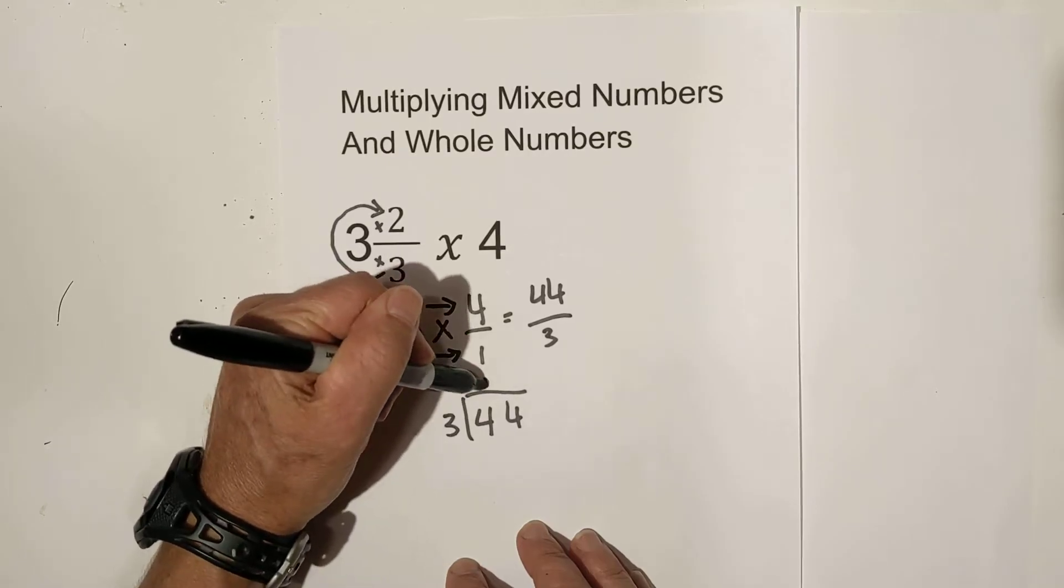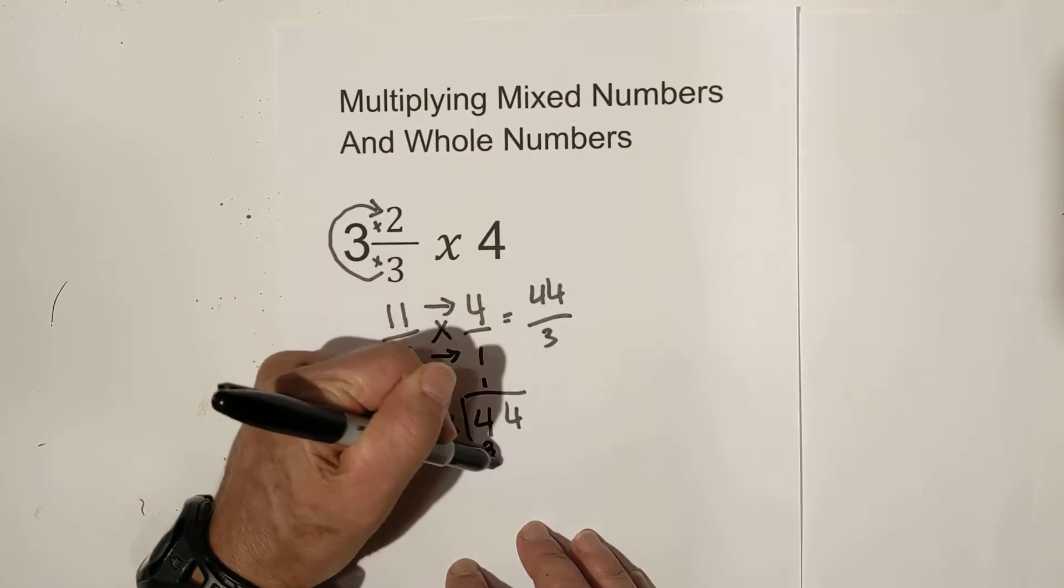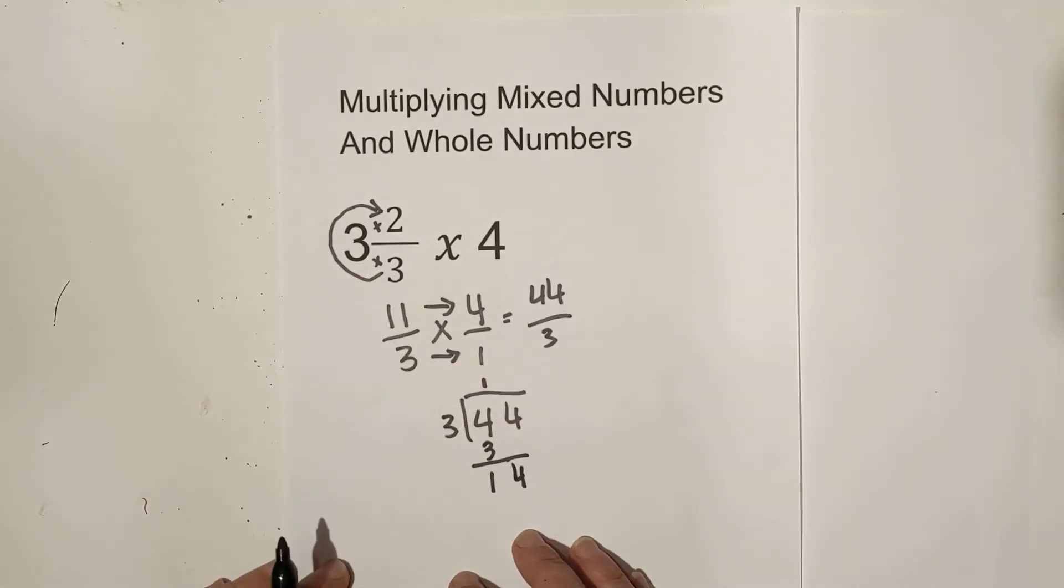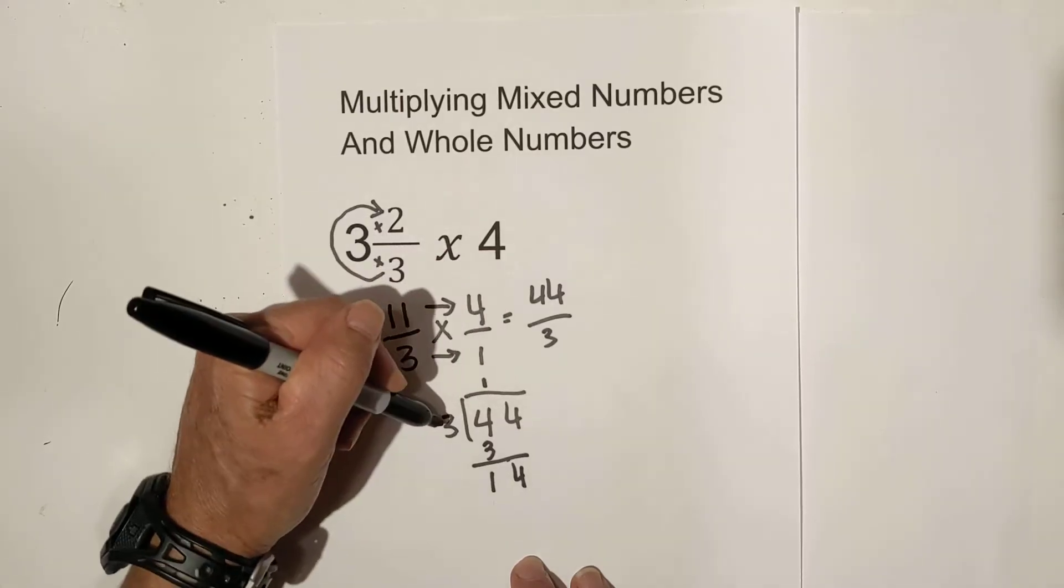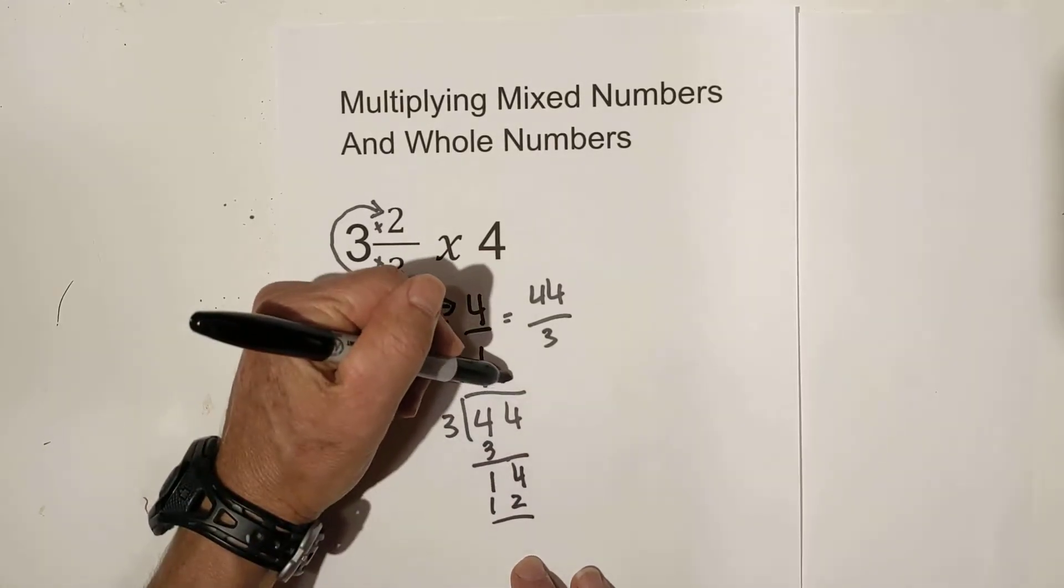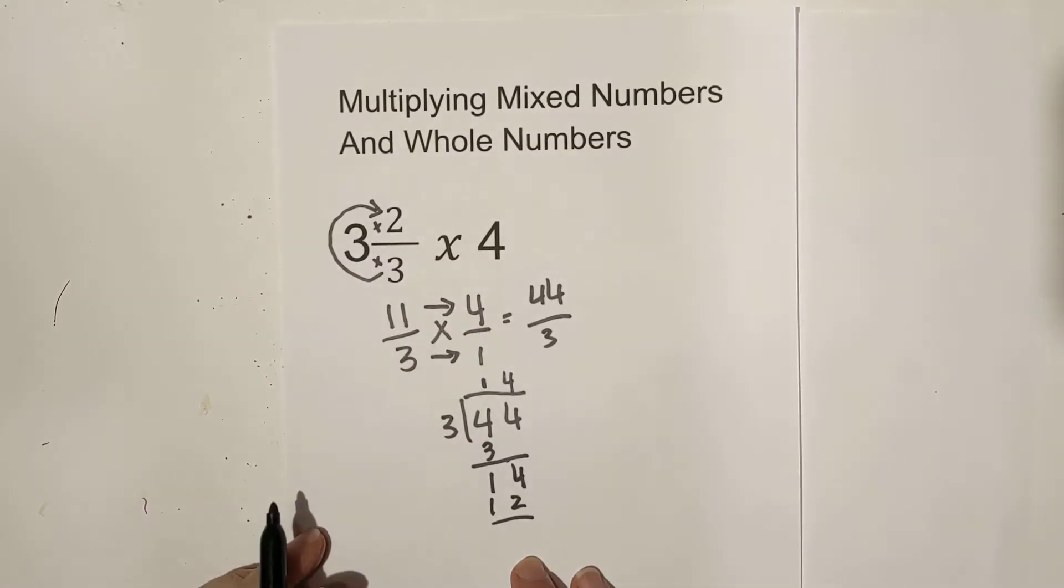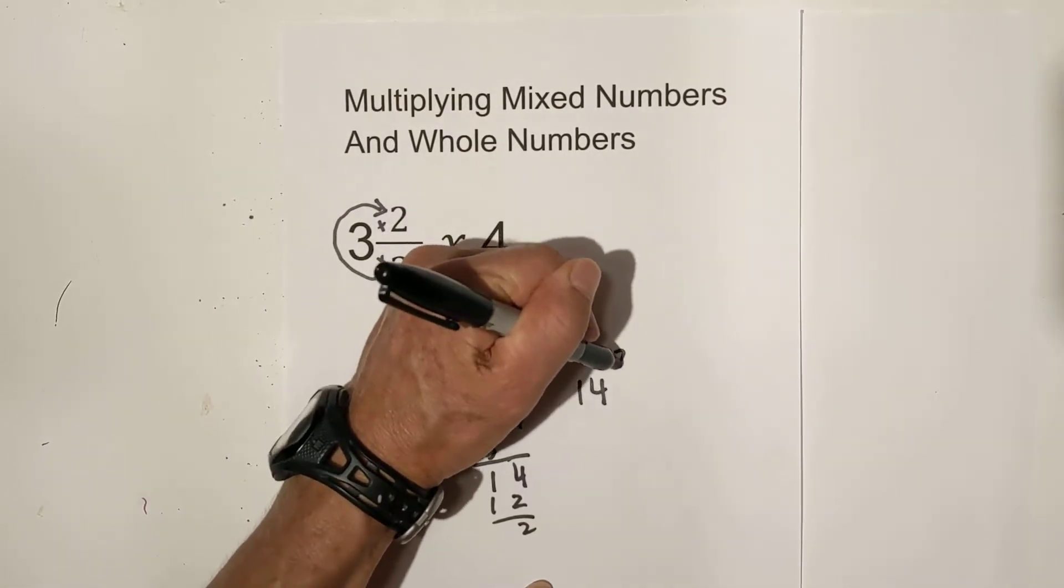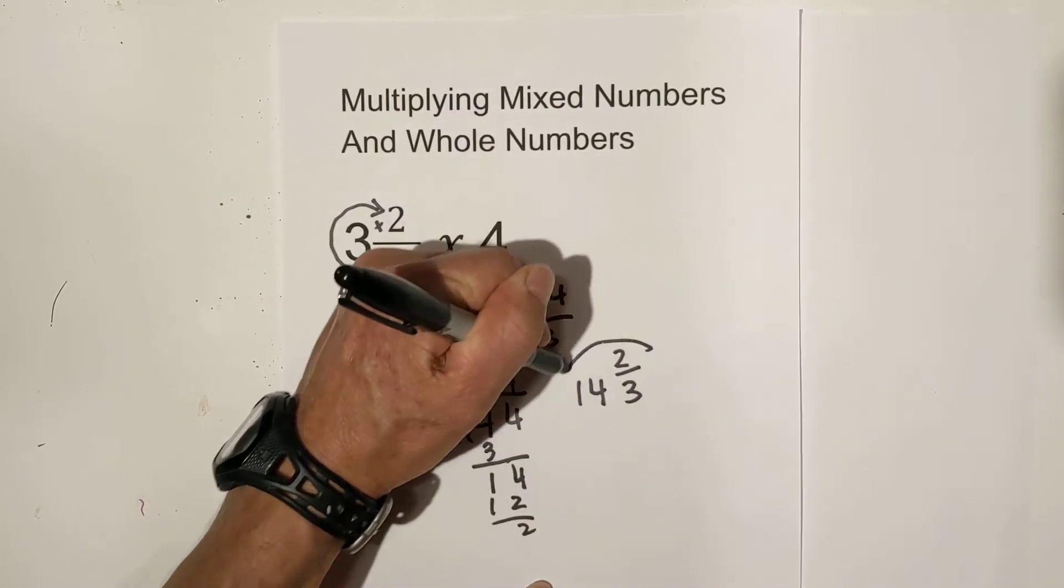3 goes into 4, 1 time. 1 times 3 is 3. We have a remainder of 1. Bring down the 4. And now 4 times 3 is 12. We have a 4 right there. And we have a remainder of 2. And so it is 14 and 2 thirds.